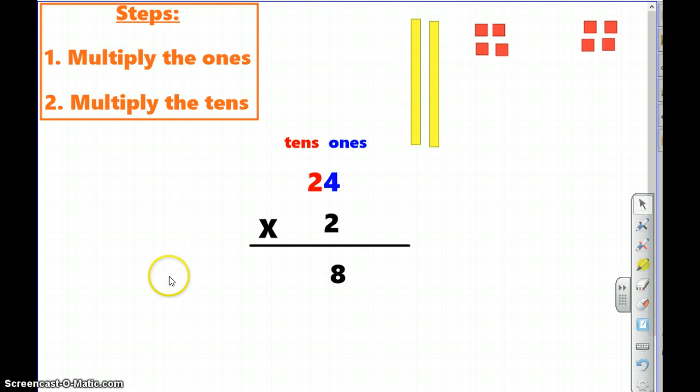Now step two says multiply the tens. So I need to multiply two tens by two. So here I'm looking at two times two, which I know is four. So I write that down in my tens place. And looking up here, I now have two groups of two tens. Okay. So let's compare our answer. We multiplied two times four and got eight in the ones. Two times two and got four in the tens, giving us the number 48.